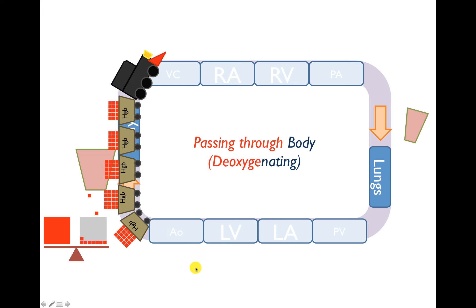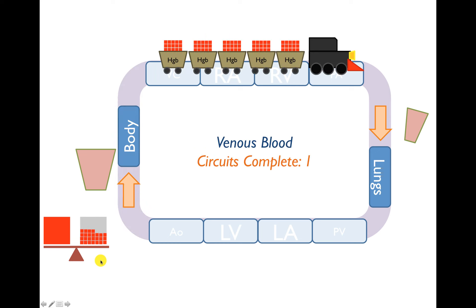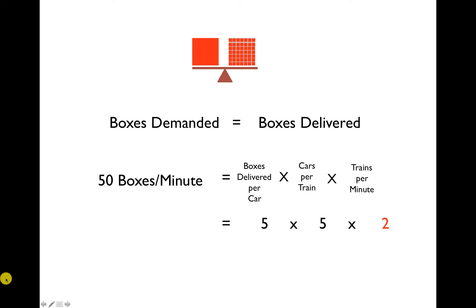Now the train is about to get to the body, where the body is demanding oxygen — shown here as a balance. On the left side is the total body oxygen demand, and the train has to drop off enough boxes to supply enough oxygen to meet the body's total demand. One circuit is complete, but the train has only met about half the demand, so the body has only gotten half its oxygen. The train makes another circuit, and now it's dropped off sufficient boxes to satisfy the demand.